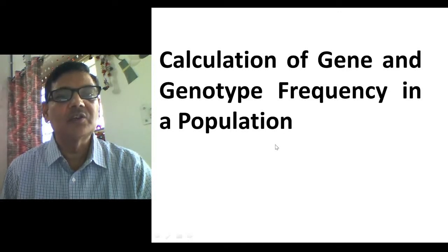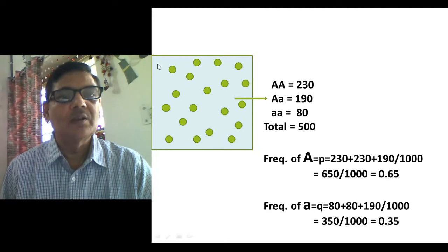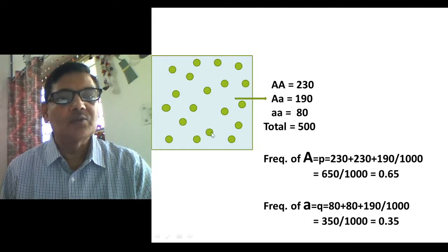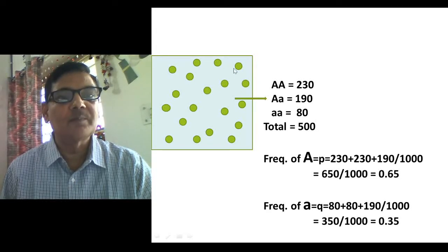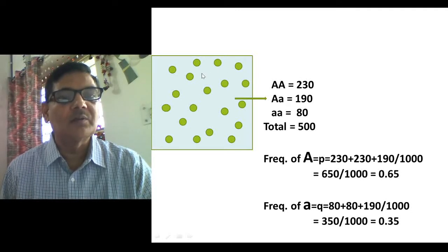In this presentation I am going to explain the calculation of gene and genotype frequency in a population. I have shown in this area so many individuals — these round structures represent individuals. So it is a population, an area where the individuals of a population are found.